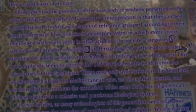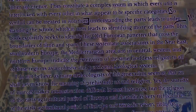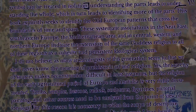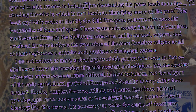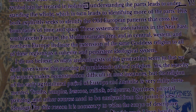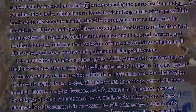Understanding the part leads to understanding the whole, which in turn leads to identifying more of the parts. This book explicitly seeks to identify the old European patterns that cross the boundaries of time and space. These systematic associations in the Near East, Southeastern Europe, and Mediterranean area, and in Central, Western, and Northern Europe indicate the extension of the same goddess religion to all of these regions as a cohesive and persistent ideological system.